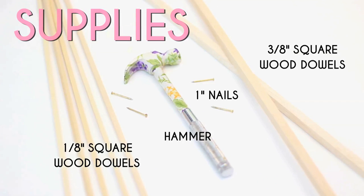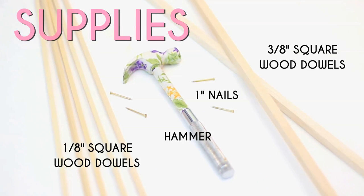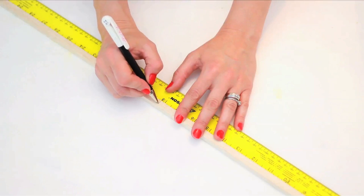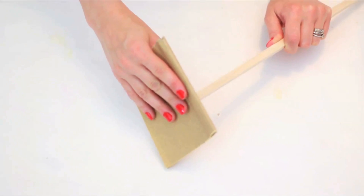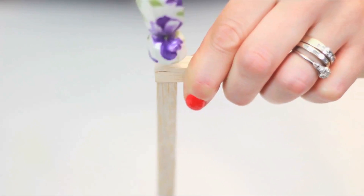To make a square display you'll also need a hammer and one inch nails. Use dowels that are 3 eighths of an inch thick and cut four 18 inch pieces. Make a square with those pieces and attach them with one inch nails and a hammer.